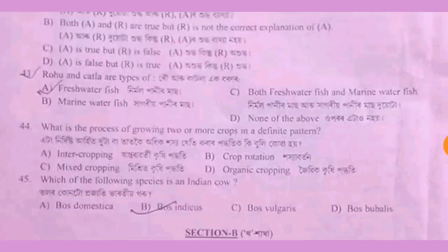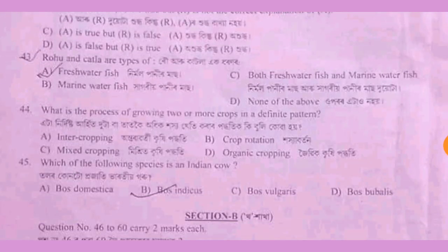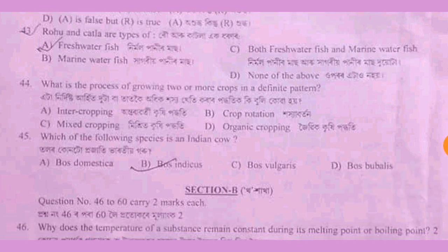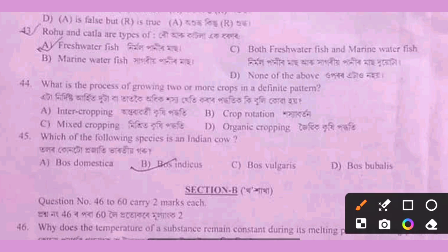The next question: row and cutler are types of agricultural tools. What is the process of growing two or more crops in a definite pattern? The next question: which of the following species is an Indian cow?